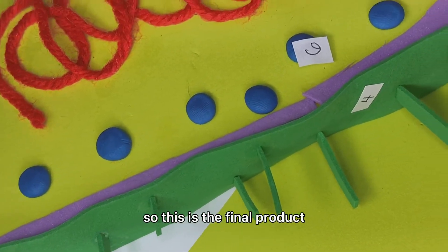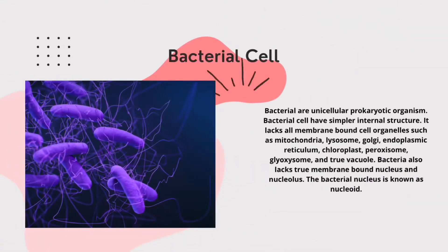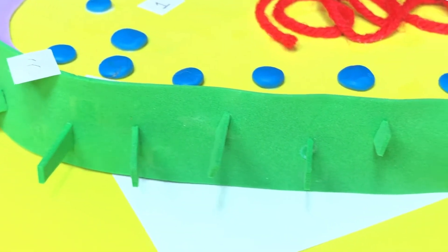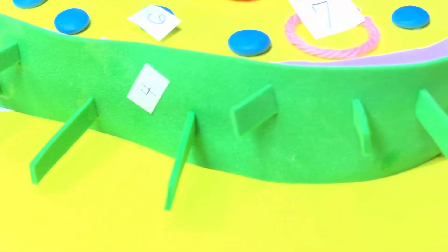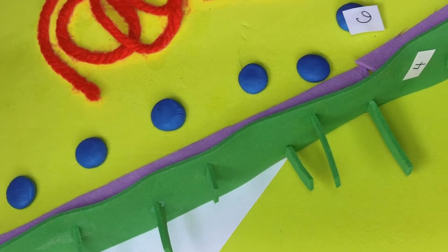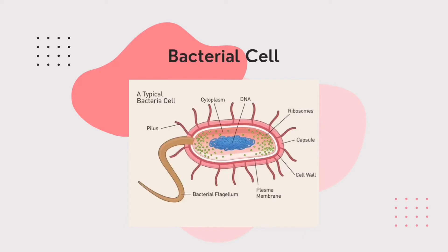So, this is the final product of the 3D model of a bacterial cell. Bacteria are unicellular prokaryotic organisms. Bacterial cells have simpler internal structure. It lacks all membrane-bound cell organelles such as Mitochondria, Lysosome, Golgi, Endoplasmic Reticulum, Chloroplast, and others. Bacteria also lacks a true membrane-bound nucleus and nucleolus. The bacterial nucleus is known as the nucleoid.